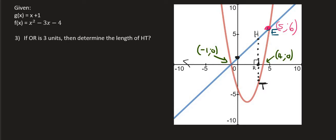So now what we're going to say is, and this is a very typical exam type of question, they say that if O, R, so from O, O is always your center point, so from O to R, R is over here, they're telling us that that is three units long, then they say determine the length of HT.